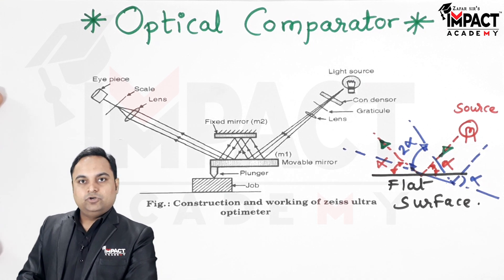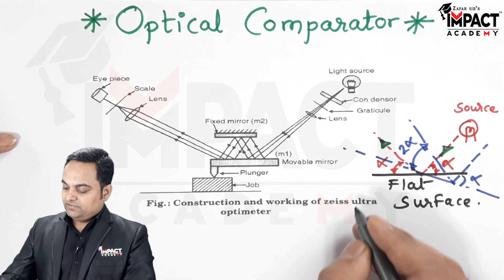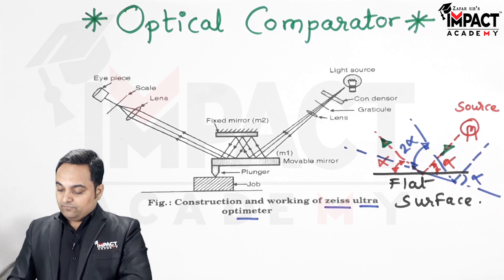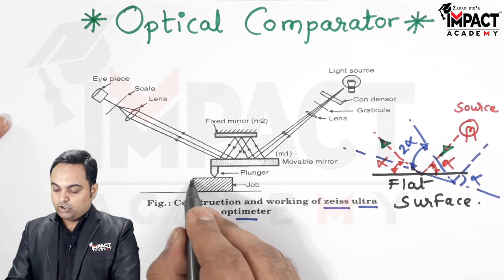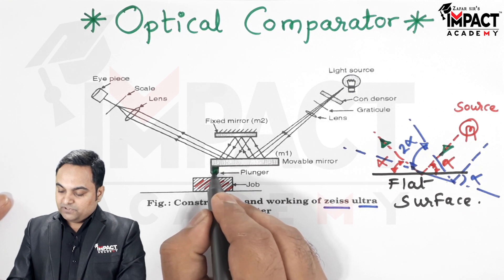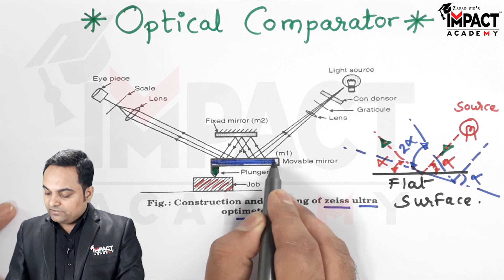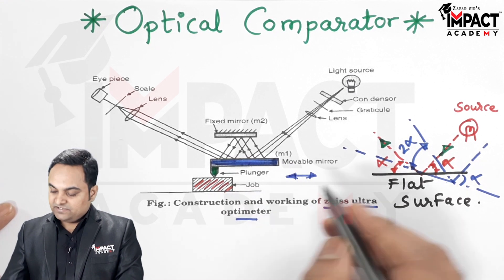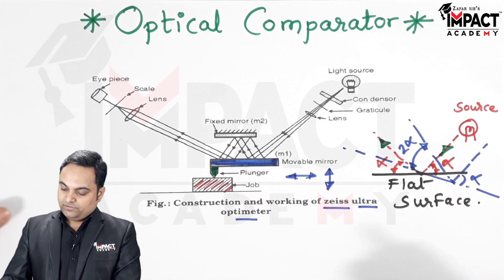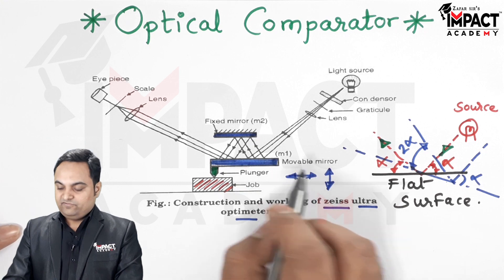That is the principle used in optical comparators to check whether a surface is perfectly flat or not. The diagram shown here is also called the Zeiss Ultra Optimator, which is a kind of optical comparator. Its parts include: first, a plunger kept in contact with the workpiece; then a movable mirror connected to the plunger, denoted as M1; and a fixed mirror parallel to it, denoted as M2.